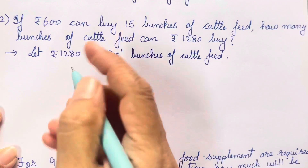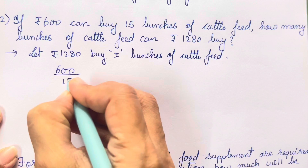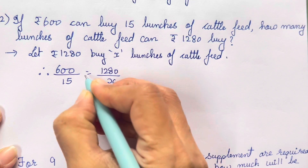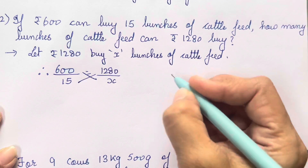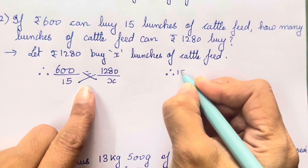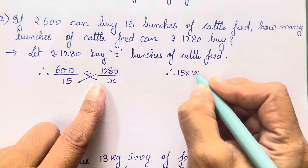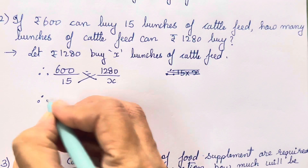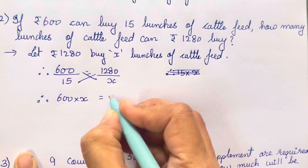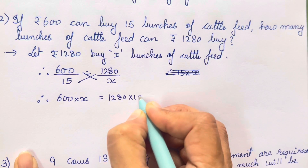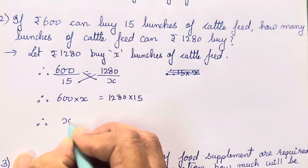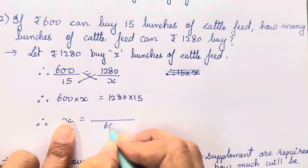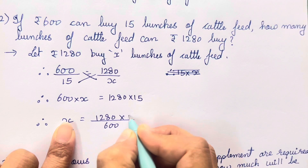Now once you all have done, we will arrange this: 600 upon 15 is equal to 1280 upon x. Again we are going to cross multiply. After cross multiplication: 600 into x is equal to 1280 into 15. So 600x = 1280 × 15. Then x we will keep over here and multiplication will change to division, so this will become 600. 1280 will come over here into 15.